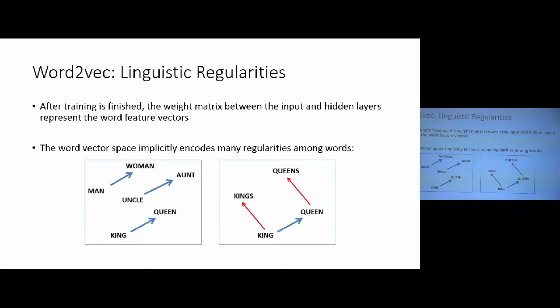After the training is finished, then the matrix between the input layer and the projection layer, or as it is called in the neural network literature, the hidden layer, this matrix represents the word feature vectors. So, each word then is associated with, say, a 100-dimensional vector of float numbers.